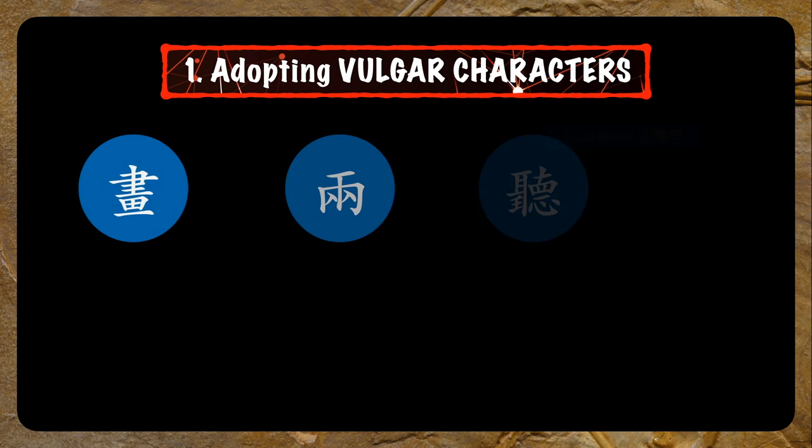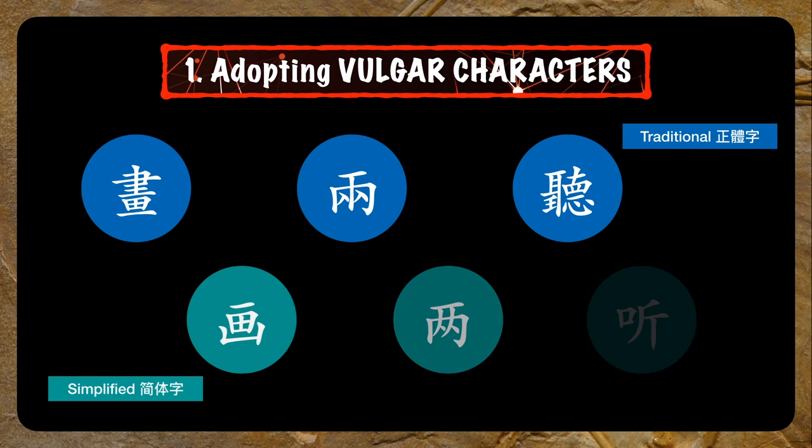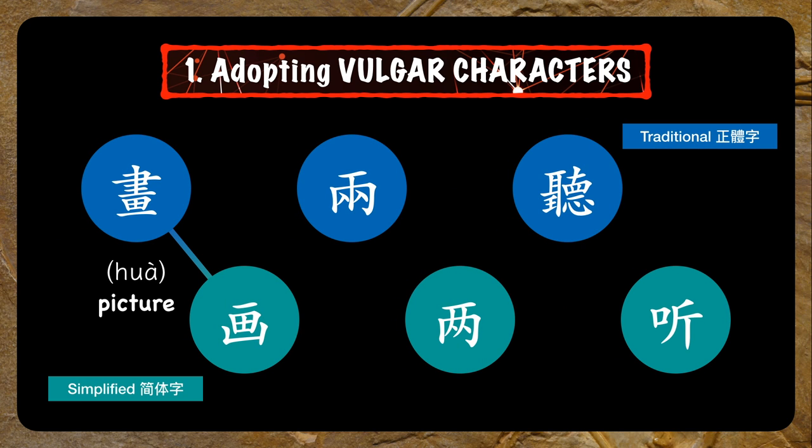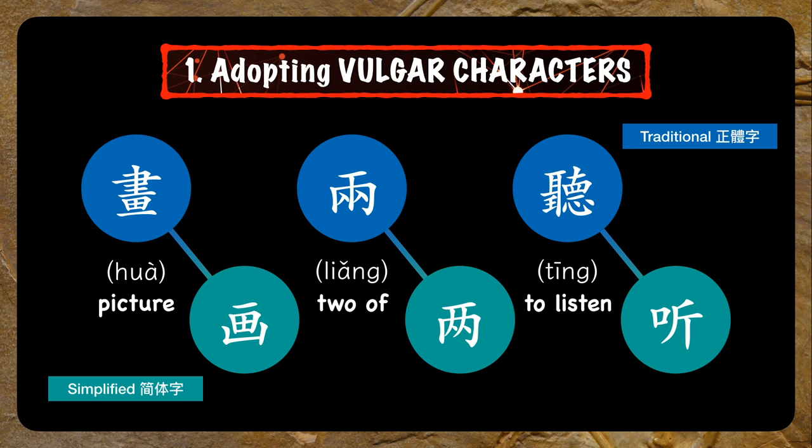The more accurate way of saying it is that these vulgar characters were officially adopted as standard characters — it would be like if 'gonna' was added to the Merriam-Webster dictionary in 2023. And using these vulgar characters is the first method by which Chinese characters were simplified. Here are a few examples: 画 (picture), 两 (two of), and 听 (to listen).